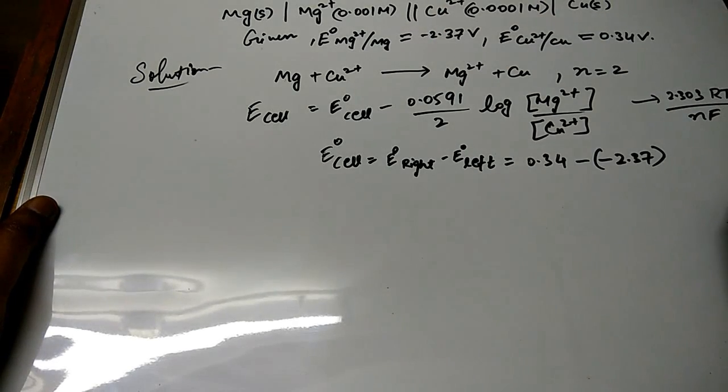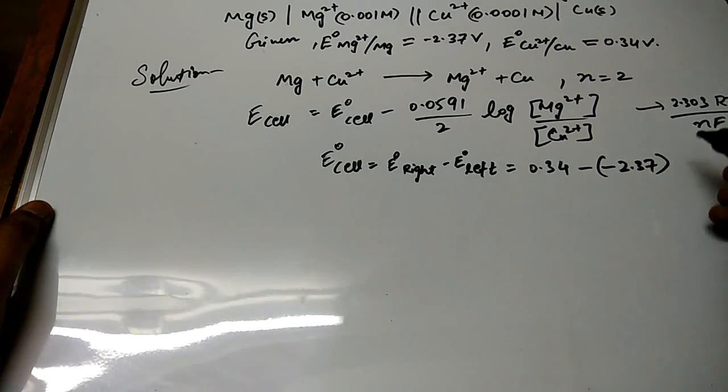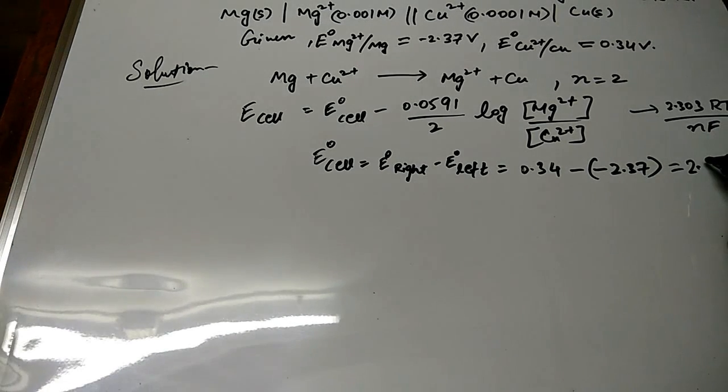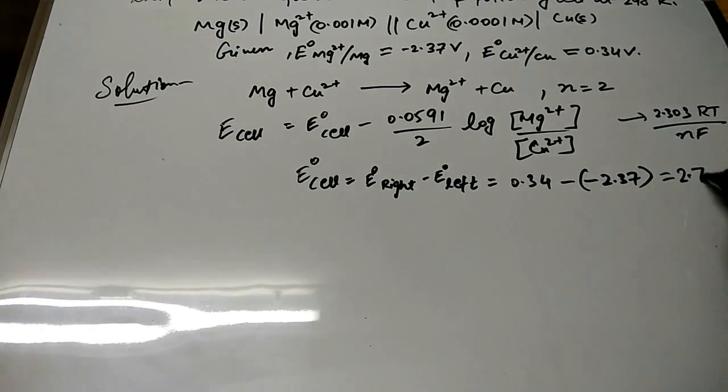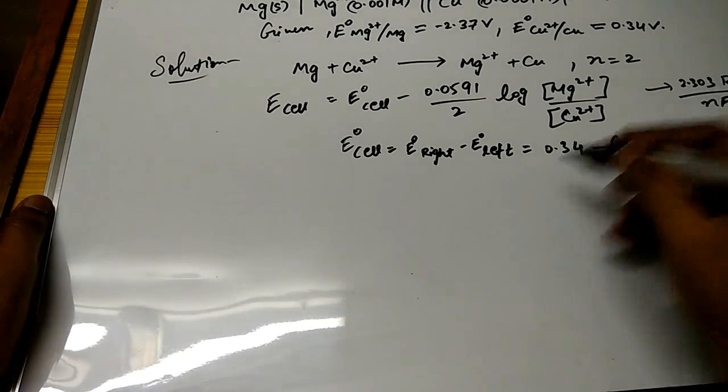So 0.34 - (-2.37). Because 2.37 is also negative value, we have to subtract it so it will become positive and the answer will become 2.71. So this is the E°_cell.